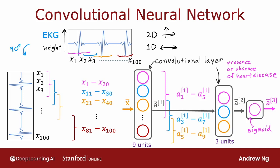And it turns out that with convolutional layers, you have many architecture choices, such as how big is the window of inputs that a single neuron should look at, and how many neurons should each layer have. And by choosing those architectural parameters effectively, you can build new versions of neural networks that can be even more effective than the dense layer for some applications.